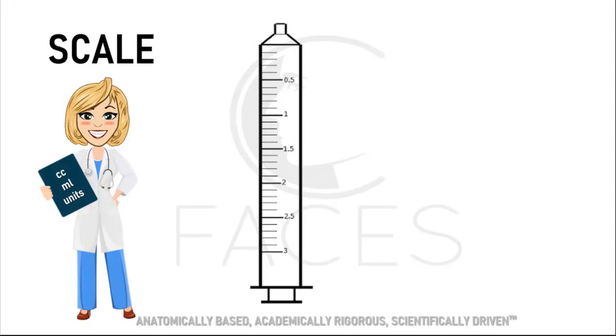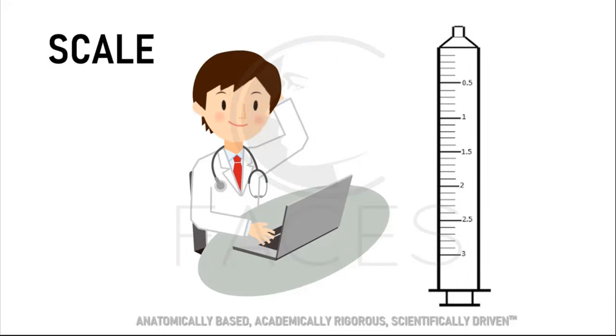The graduated scale allows us to precisely measure the amount of medication we plan to deliver. The first bold line closest to the needle is considered the zero mark and the last number indicates the total capacity of the syringe. These marks are usually in cc's, milliliters, or units. But zero and capacity are easy to figure out. What about the smaller, unmarked lines in between?